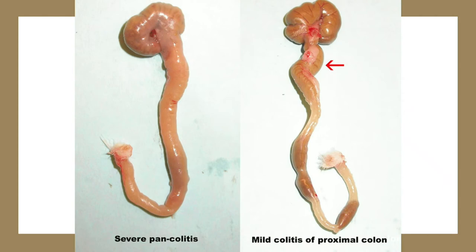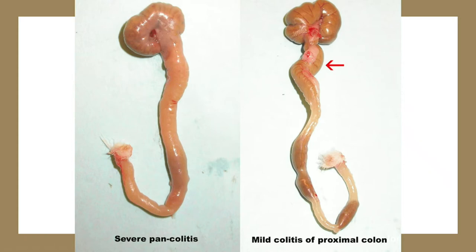This is a picture of a rat GI tract, mainly focusing on the colon. This section is definitely a lot more inflamed — this has pancolitis all throughout — while down here you can see the normal size the colon would be. 'Pan' is a prefix meaning all, so pancolitis means the whole colon. The proximal colon refers to the portion closer to the stomach; if it were on the far end, it would be called distal.